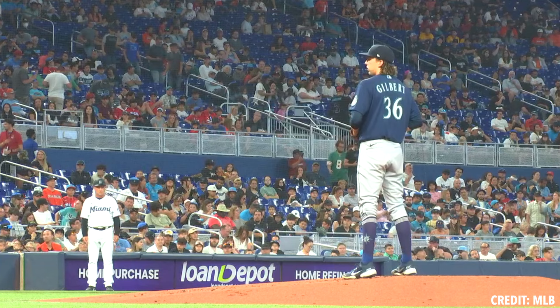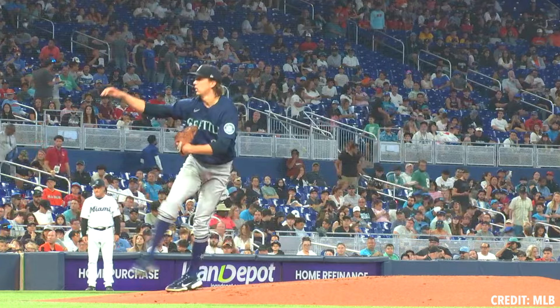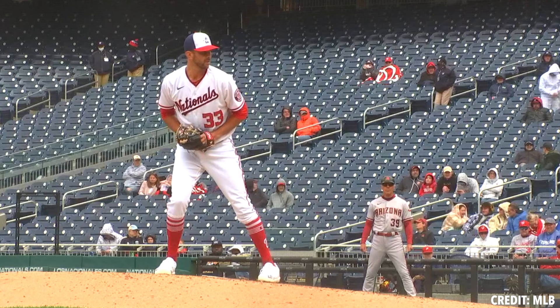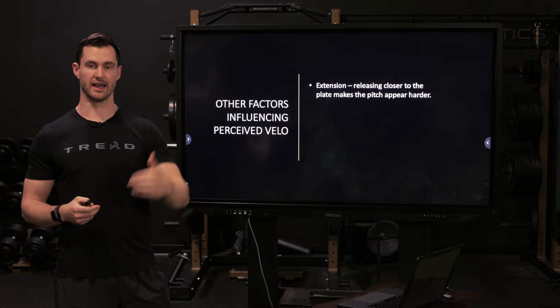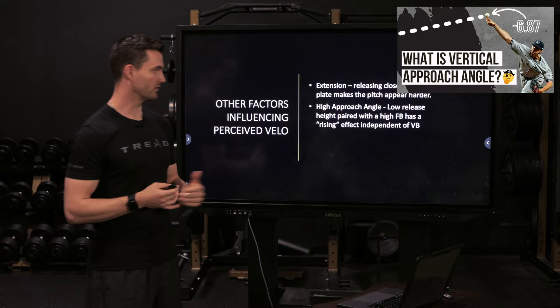There are other factors associated with perceived velocity besides vertical break and actual velocity. One is extension — if you're releasing the ball closer to home plate, that pitch is going to look faster to an onlooker or to the hitter. Think Aroldis Chapman: he's getting way out in front of the rubber at ball release, so not only is that pitch 100-plus miles an hour, he's also releasing it closer than average, which impacts how fast that pitch looks.